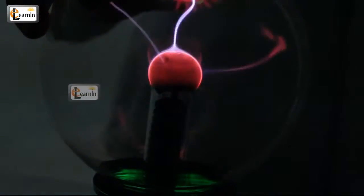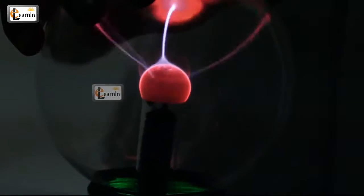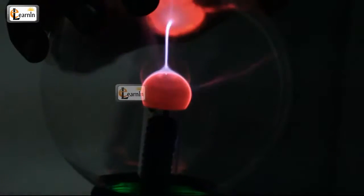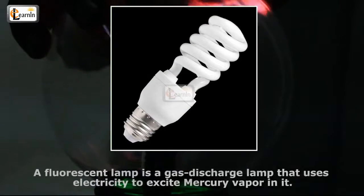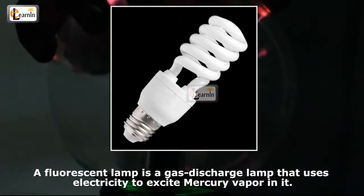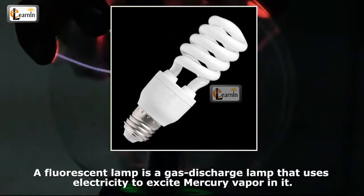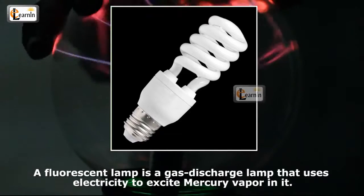The plasma lamp emits a high frequency current, and hence you can see a lot of magic sparks in it. A fluorescent lamp or fluorescent tube is a gas discharge lamp that uses electricity to excite mercury vapor in it.